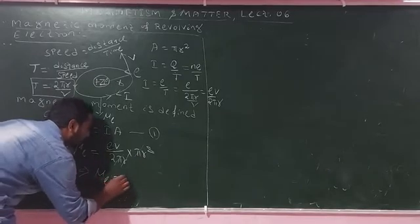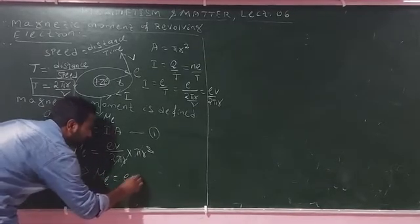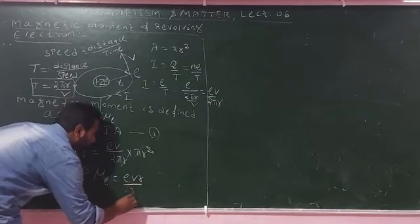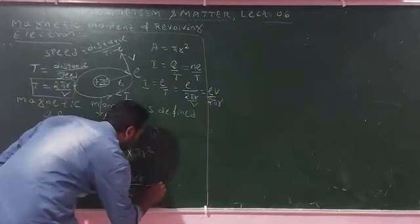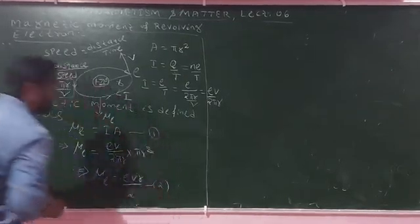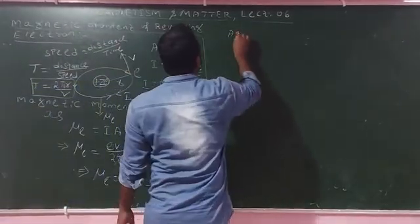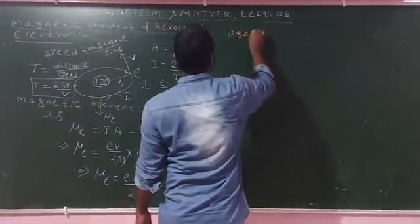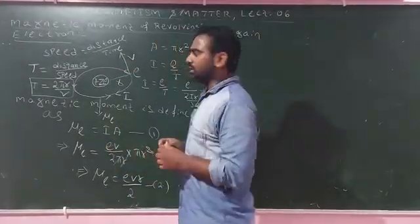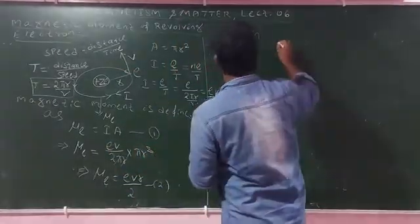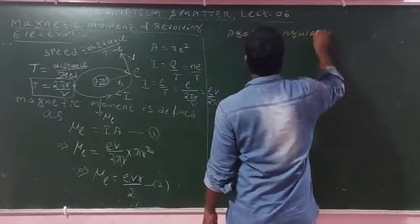So mu_L equals EVR divided by 2. This gives us the orbital magnetic moment. Now we also consider the angular momentum of the electron as it rotates.